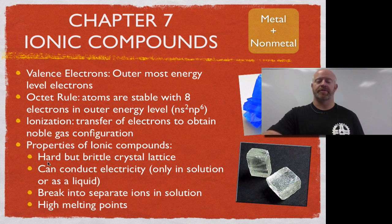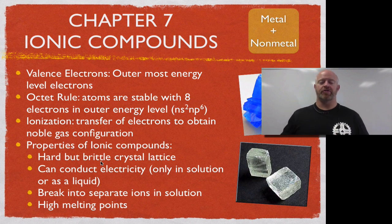The first is that ionic compounds tend to be hard but brittle. So ionic compounds lock into what we call a crystal lattice. It's where they actually have a repeating pattern of their formula over and over and over again. That locking pattern makes them very hard but also makes them very brittle.